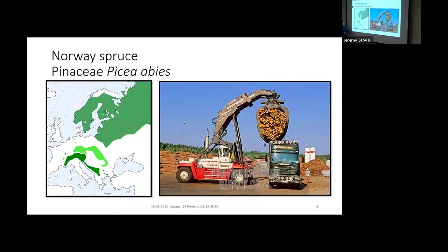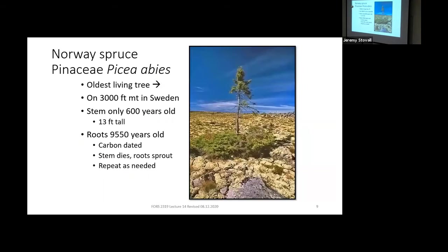The native range of Norway Spruce is Scandinavia, northern Russia, and northern Europe, with populations established at higher elevations further south. It's an important timber tree, with lots of management in Scandinavia on a long rotation since growth is slow. The oldest known living Norway Spruce — the oldest living tree in Europe as a single stem — is on a 3,000-foot mountain in Sweden. The top is only 600 years old and 13 feet tall, but the roots have been carbon-dated at 9,550 years old; it just keeps re-sprouting.